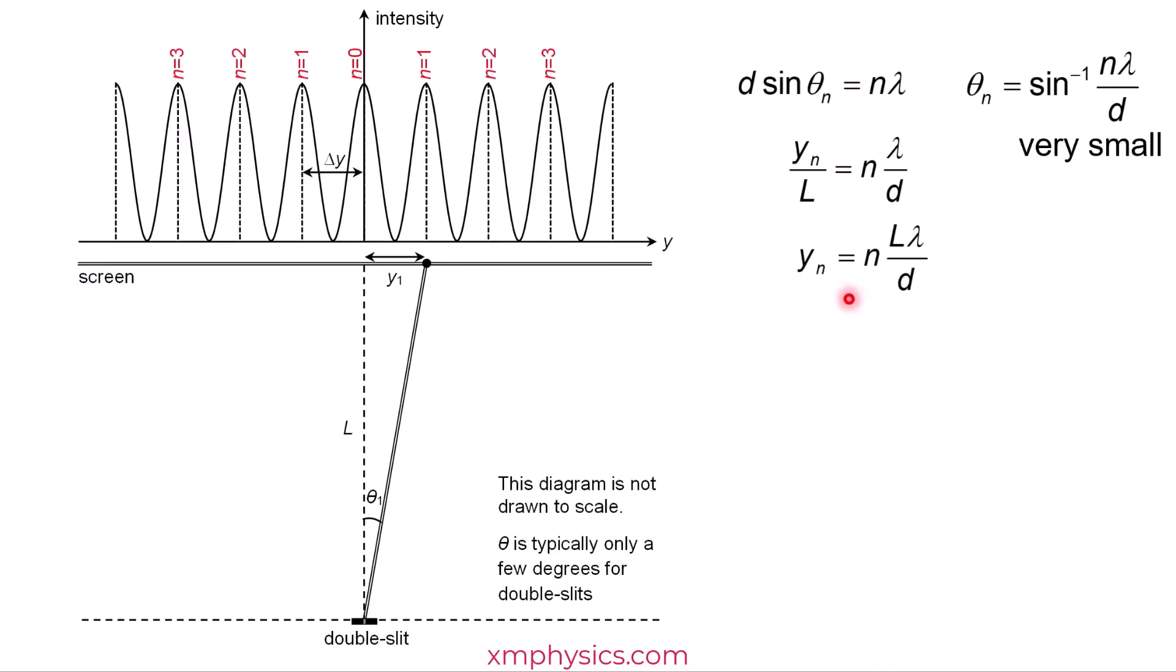Let me rearrange the equation. So now we have a very simple expression. So where is the zeroth order bright fringe formed? It's formed at y0 equals to 0, right? Just substitute n to be 0. So where is the first order bright fringe formed? It's formed at y1 equals to L lambda over d. The second order bright fringe is formed at y2 equals to 2L lambda over d, and so on.